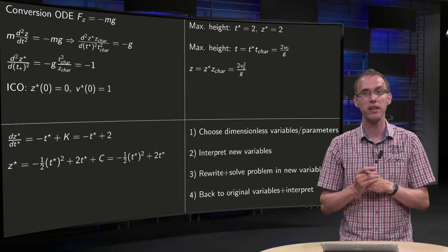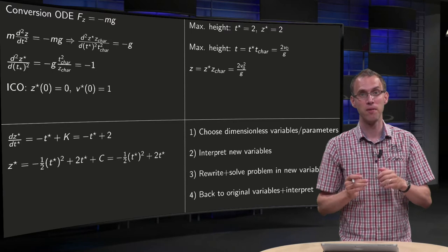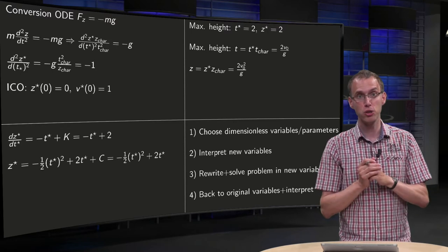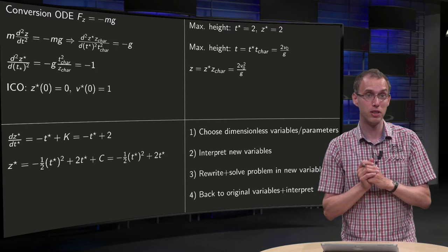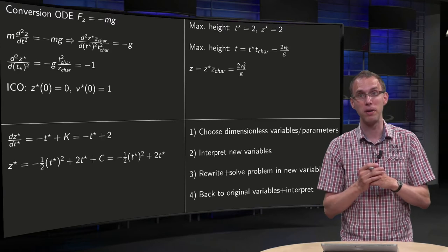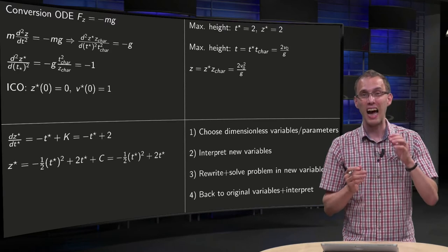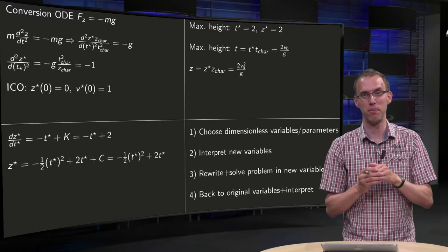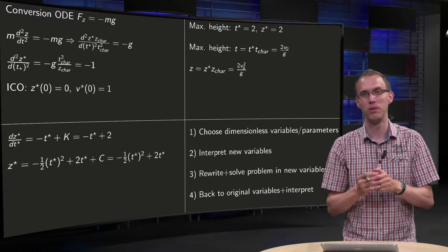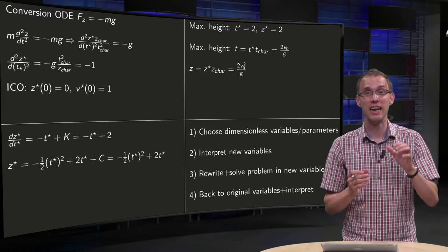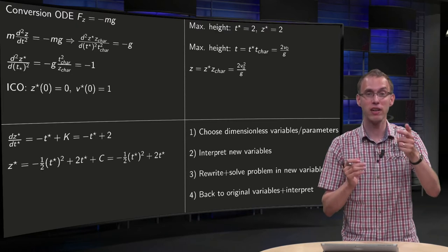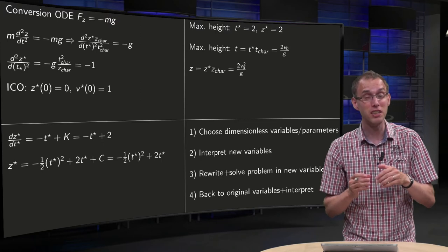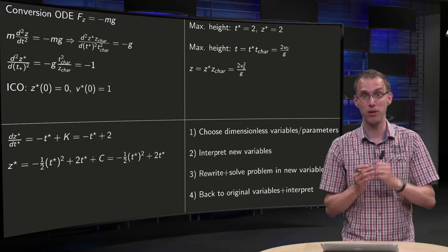So in summary, how do you non-dimensionalize? First you choose your new dimensionless variables and you try step 2 to interpret these parameters. Does it make sense to choose your parameters like this? Here a lot of physics is involved. Steps 1 and 2 are actually pretty difficult in general.